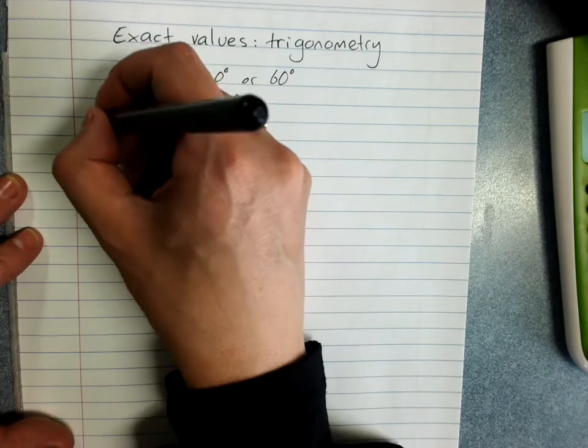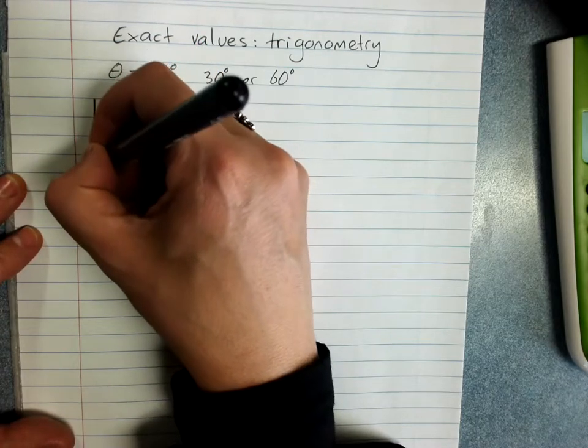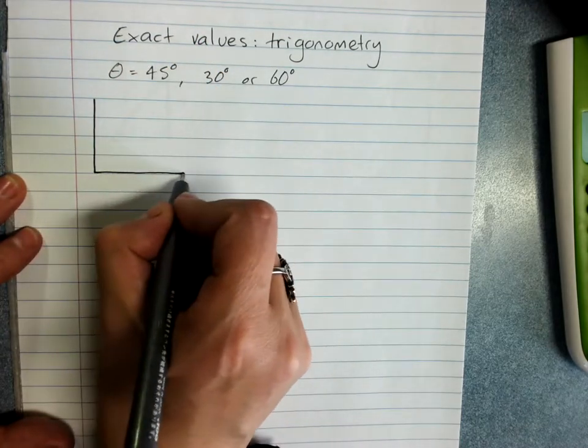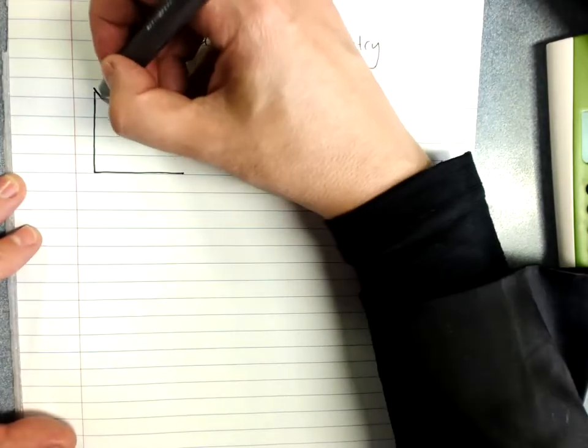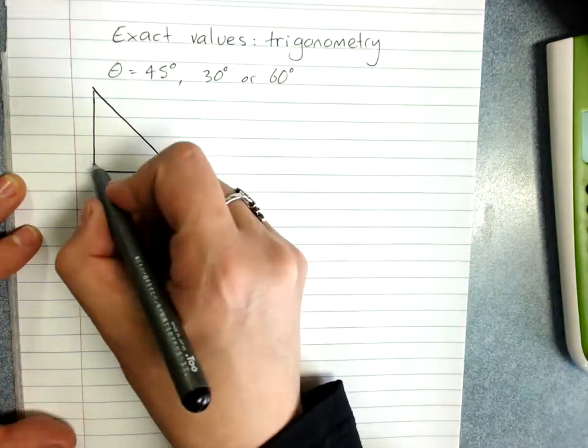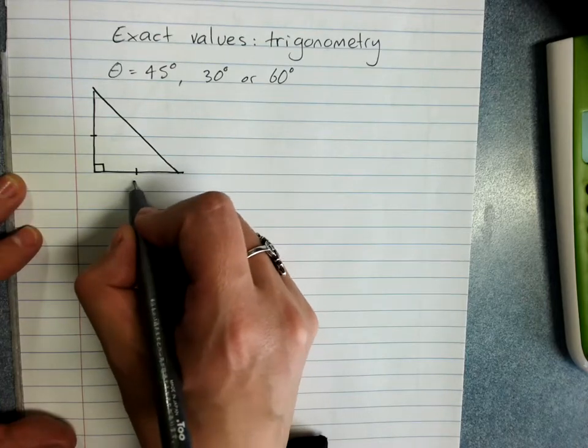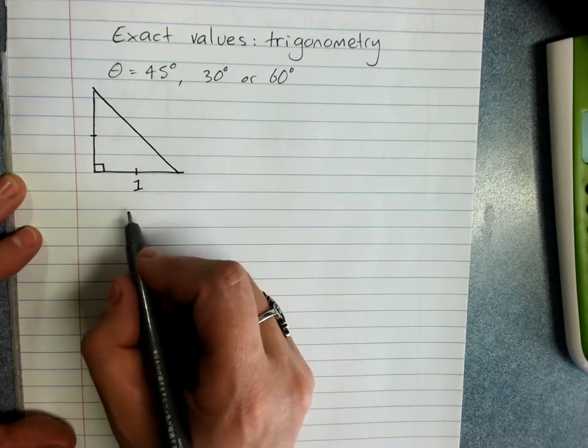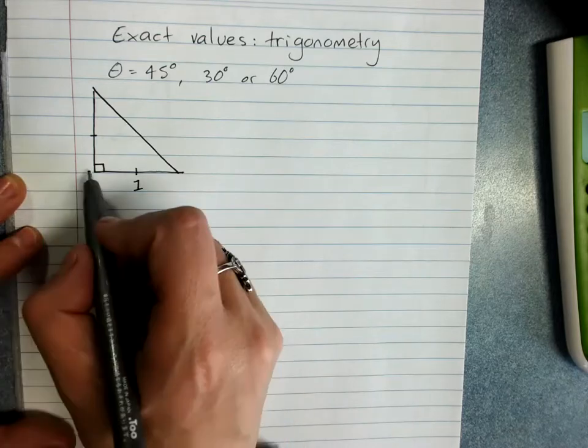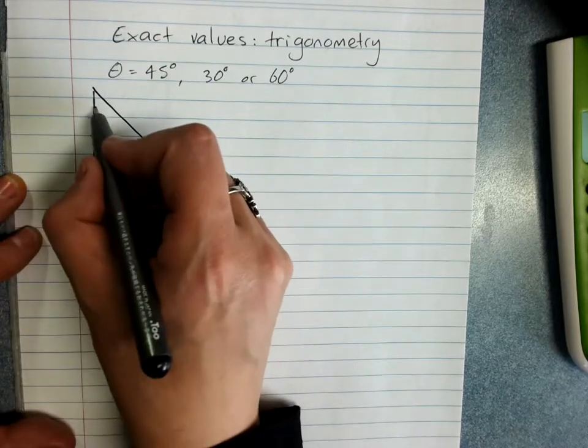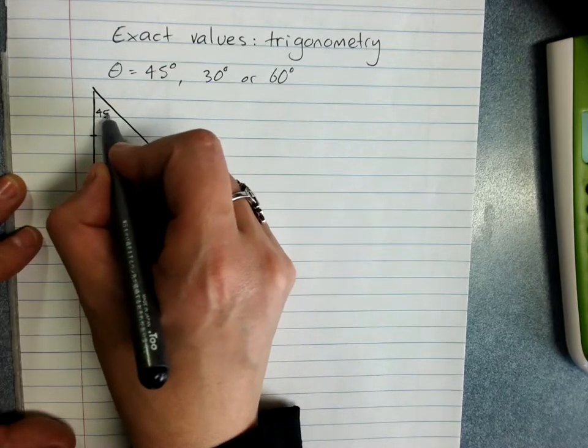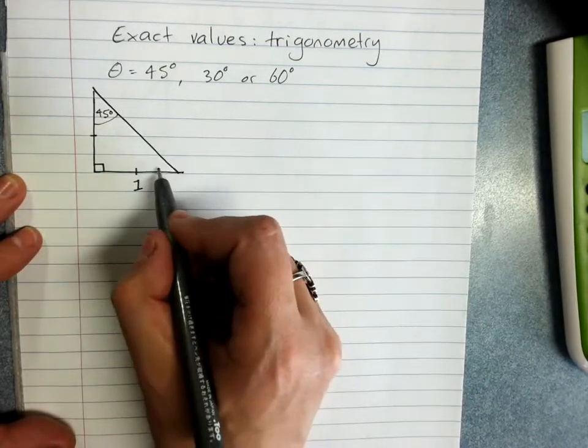For the 45 degrees, our special triangle is a right angled isosceles triangle with a side length of 1, and because it's a right angled isosceles, our angle here is 45 degrees. So is that one.